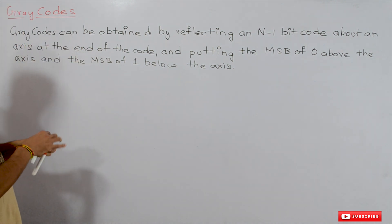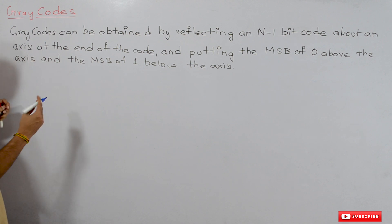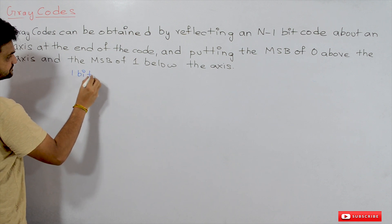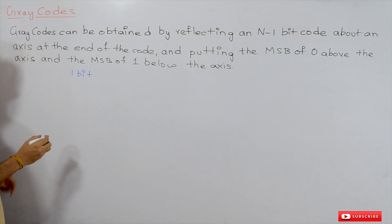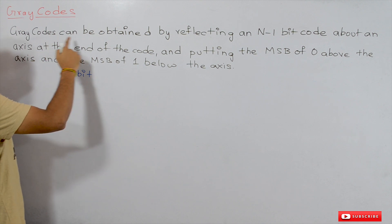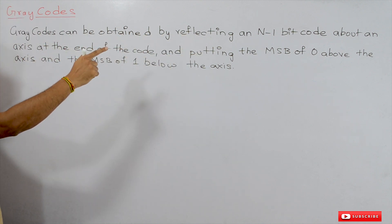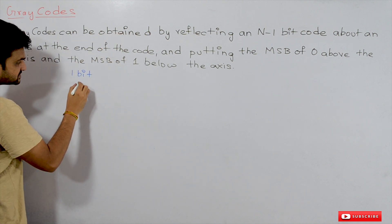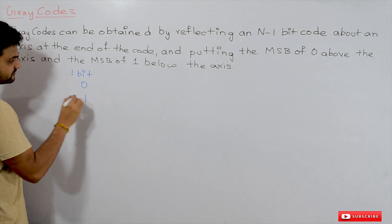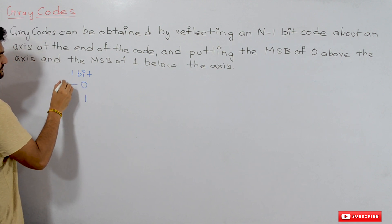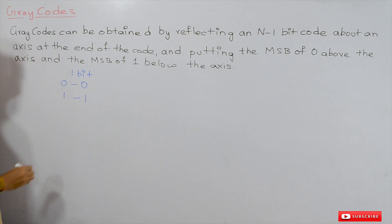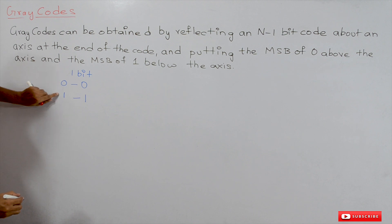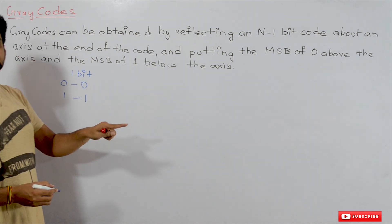If you want to represent gray codes in n bits, you take the reflection of the n-minus-one bit codes. Starting with one bit representation: the possibilities are 0 and 1. So with one bit we can represent decimal 0 and 1. This is the one-bit gray code representation for 0 and 1.